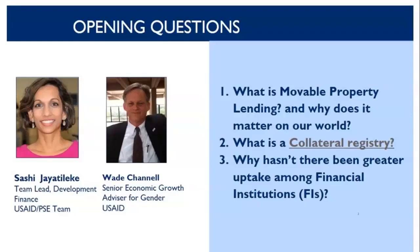We've seen tremendous growth in lending and capacity for people who don't have real estate to get loans through this kind of lending. In the US, about 60 percent of commercial lending is based on a combination of inventory and receivables, while only 20 percent is based on real estate. In much of the developing world, 80 percent or more is based on real estate, so the lending systems are constrained by the ability of people to use real estate.